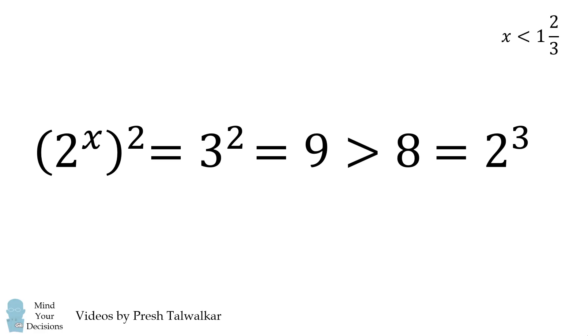Now we'll do the same sort of exercise to get a lower bound. We start out the same way, but now we'll raise both sides to the power of 2. 3 squared equals 9. 9 is greater than 8, and 8 equals 2^3.